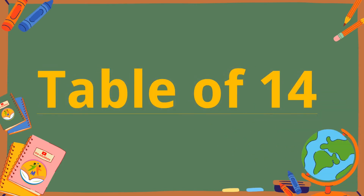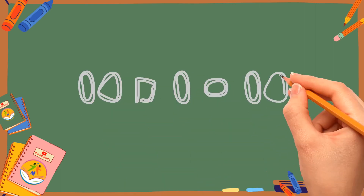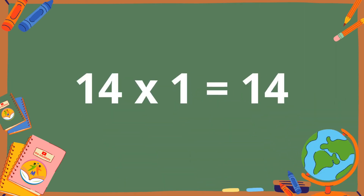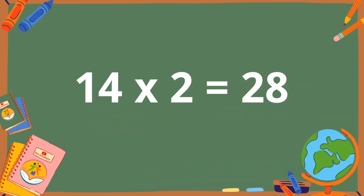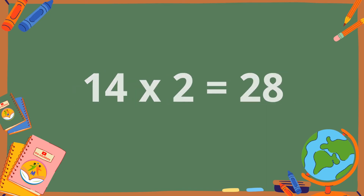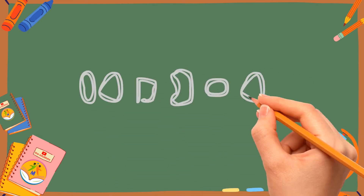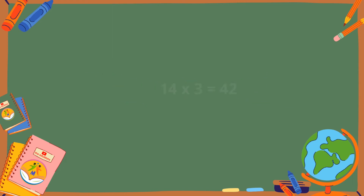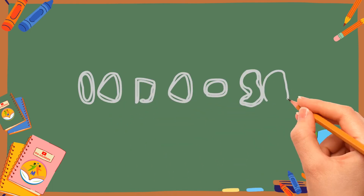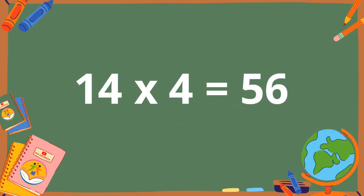Table of 14. 14 ones are 14. 14 twos are 28. 14 threes are 42. 14 fours are 56.